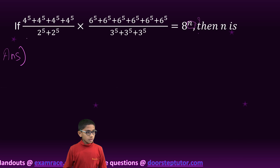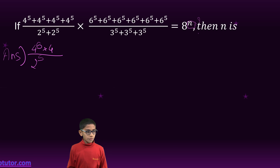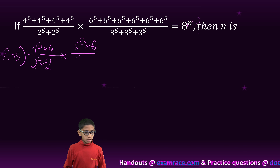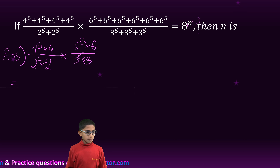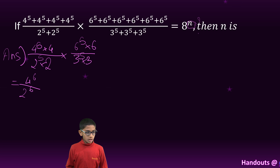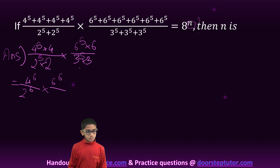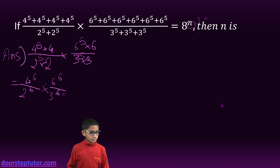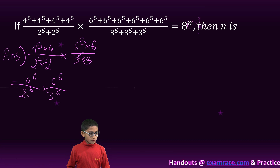So here this is 4 raised to 5 into 4, upon 2 raised to 5 into 2, into 6 raised to 5 into 6 — as this is 6 times — upon 3 raised to 5 into 3. So here this will become 4 raised to 6, upon 2 raised to 6, into 6 raised to 6, upon 3 raised to 6.